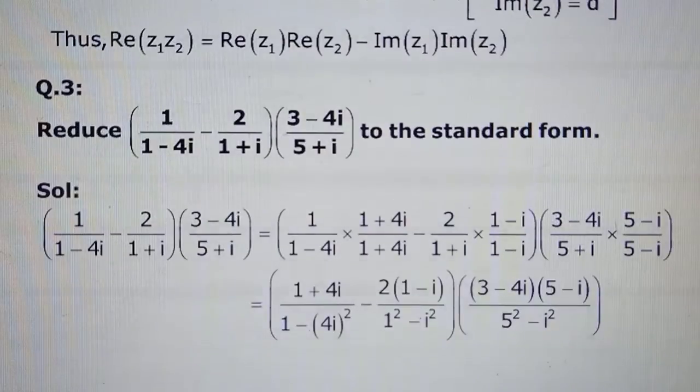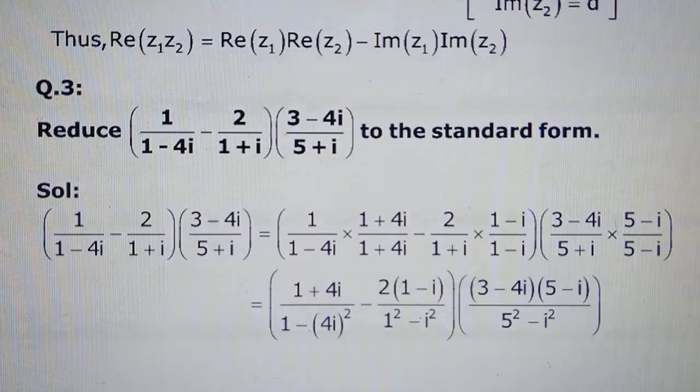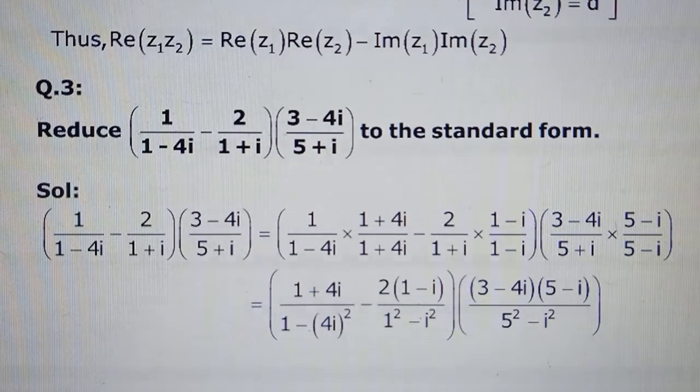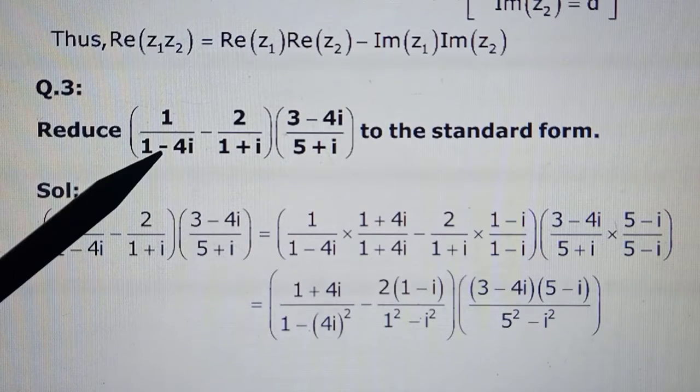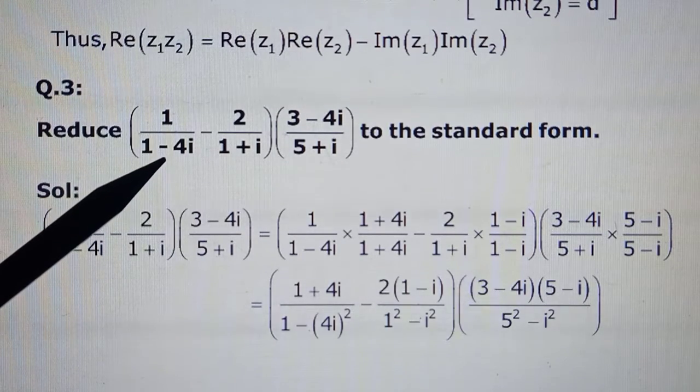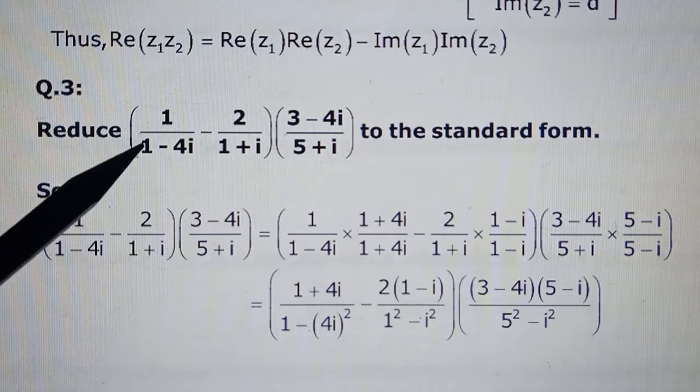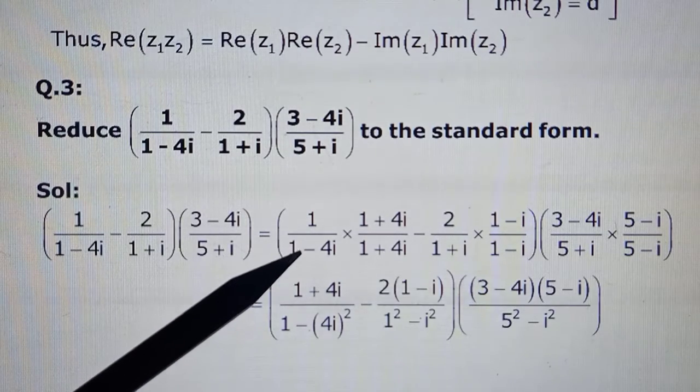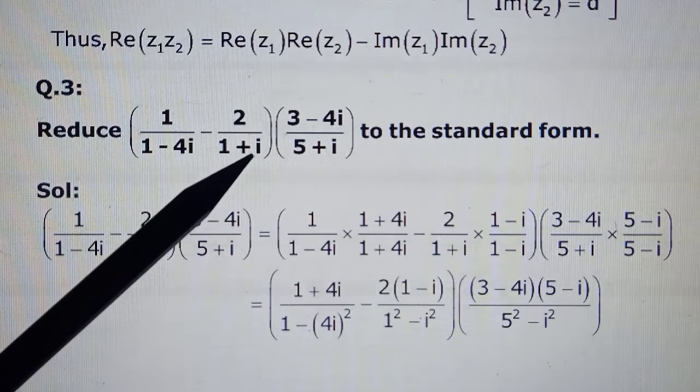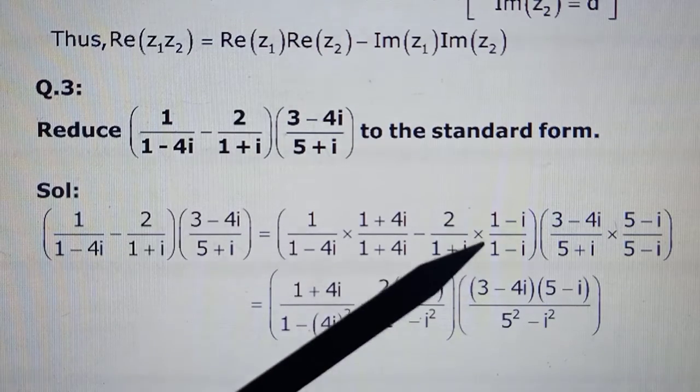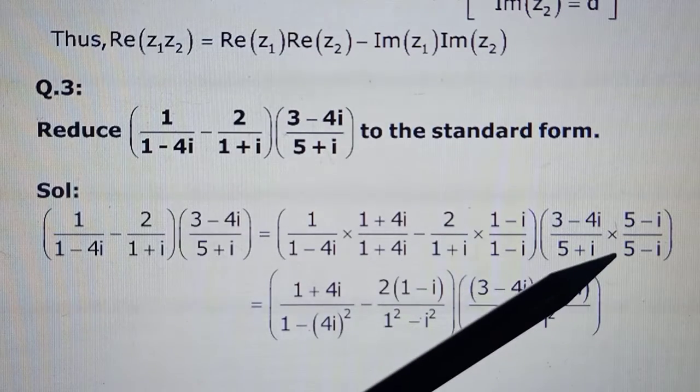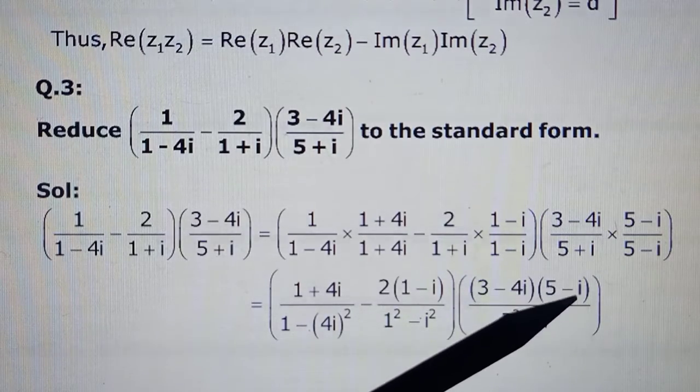Now question number three is asking you to reduce a complicated complex number to standard form, meaning a + ib form: one real number plus i times the other real number. So rationalizing is what we do when we have a complex number in the denominator; we multiply by its conjugate. So this expression we will multiply by (1 - 4i)'s conjugate in numerator as well as denominator. Likewise for the second one also, multiplying by the conjugate. Here also the same story, wherever there's a complex number in the denominator, multiply by its conjugate.